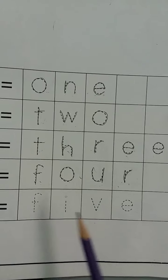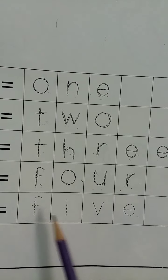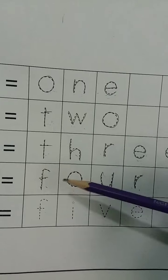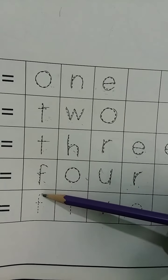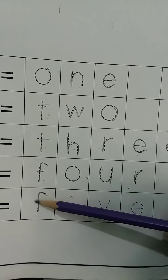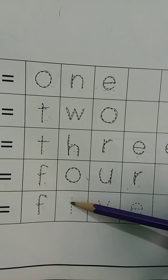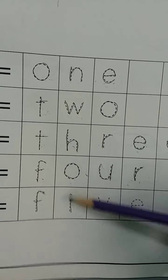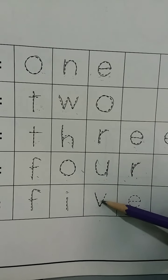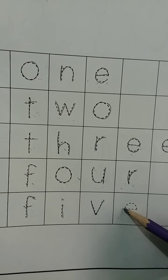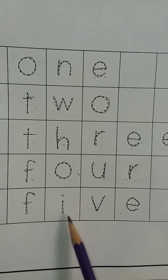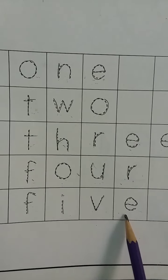Now trace 5. Kids, read with me: F, I, V, E, 5. Press with the help of pencil like this — press F. Now trace V. And trace E. Kids, read with me: F, I, V, E, 5.